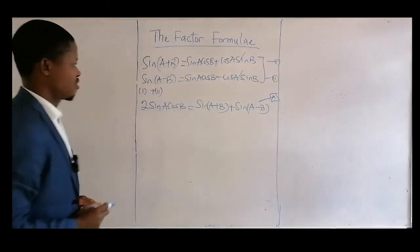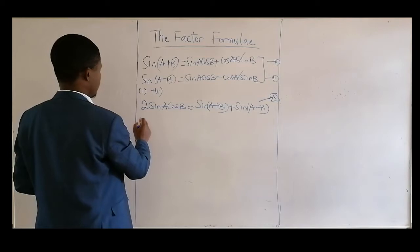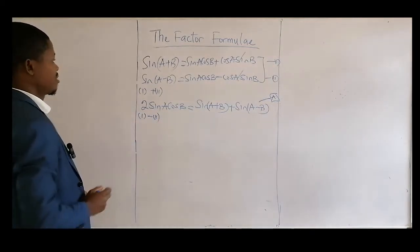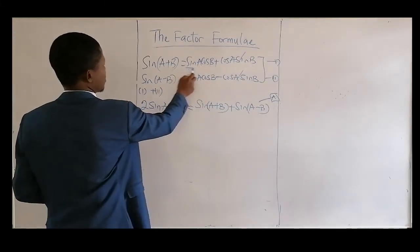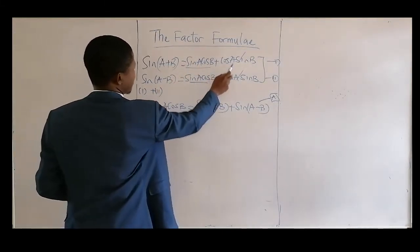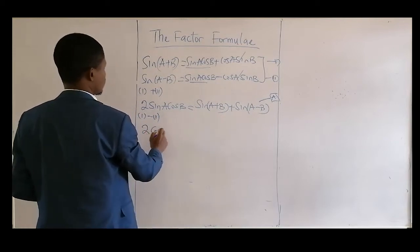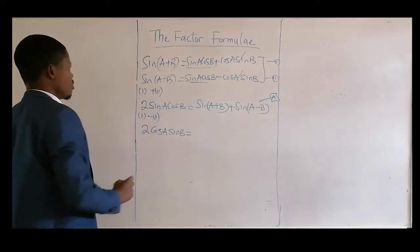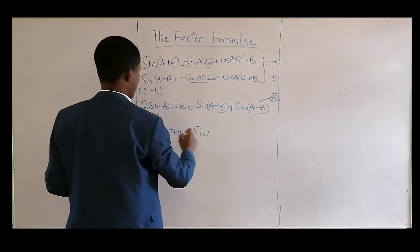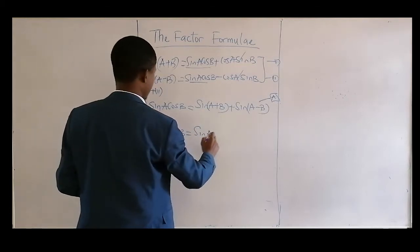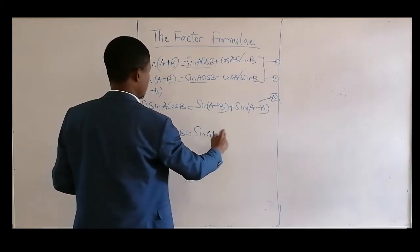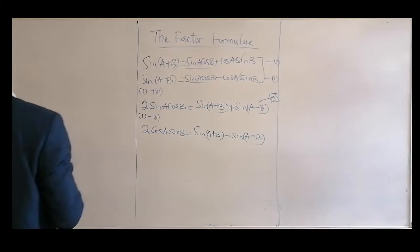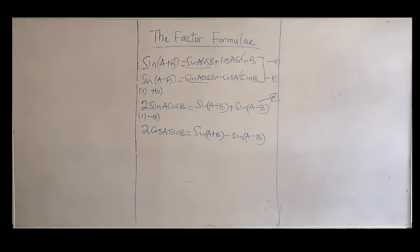Can we also subtract the two equations above? If we subtract equation one minus equation two, terms cancel and we have: 2 cos A sine B equals sine(A + B) minus sine(A − B).